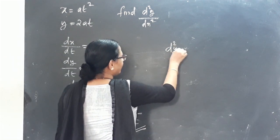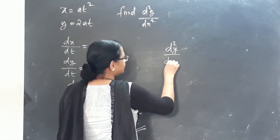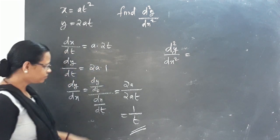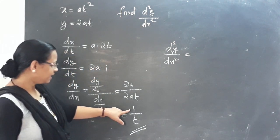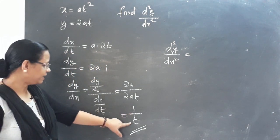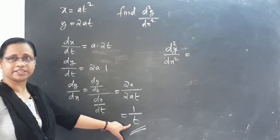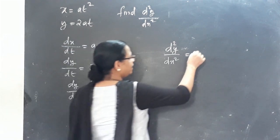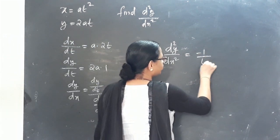For the second order derivative d²y by dx², we differentiate dy by dx which is 1/t. The derivative of 1/t with respect to t is minus 1 by t².